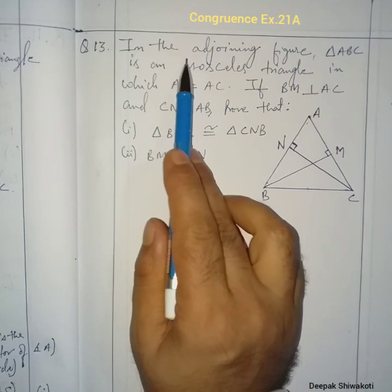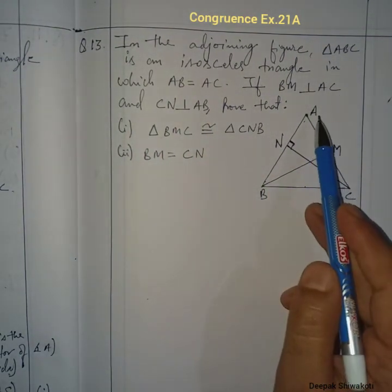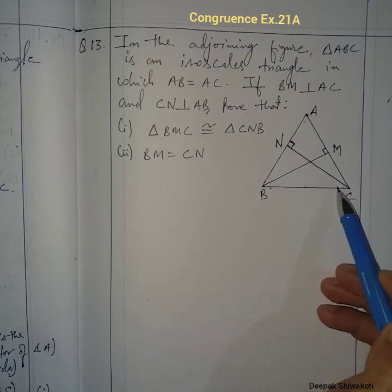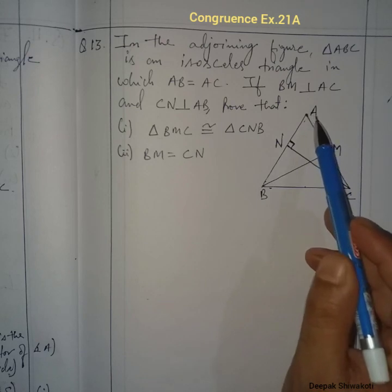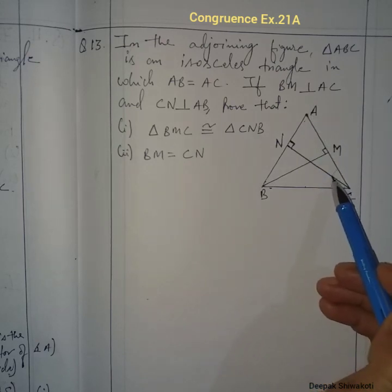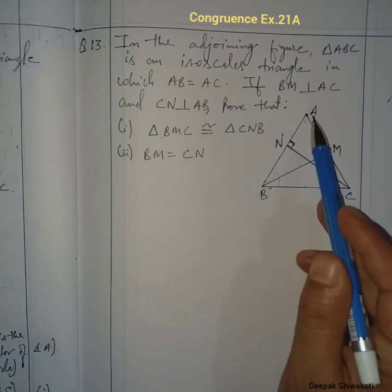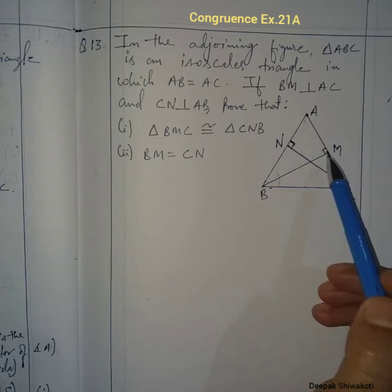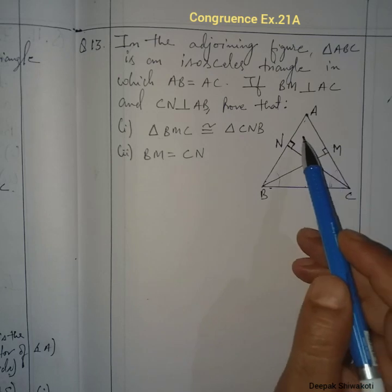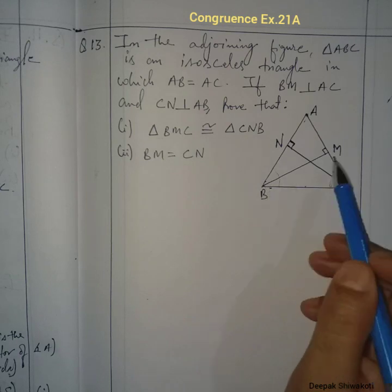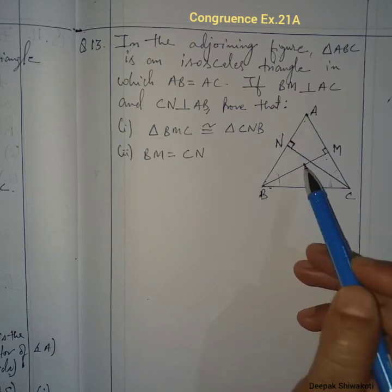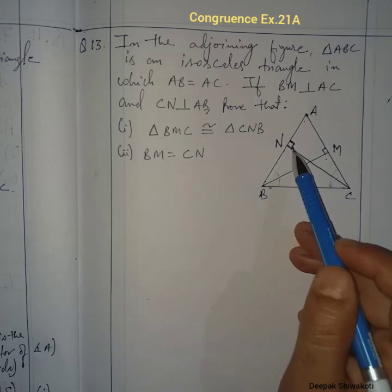Question 13: In the adjoining figure, triangle ABC is an isosceles triangle, so the opposite sides are equal and the opposite angles are equal — angle ABC equals angle ACB. AB equals AC, BM is perpendicular to AC (making 90° on both sides), and CN is perpendicular to AB.